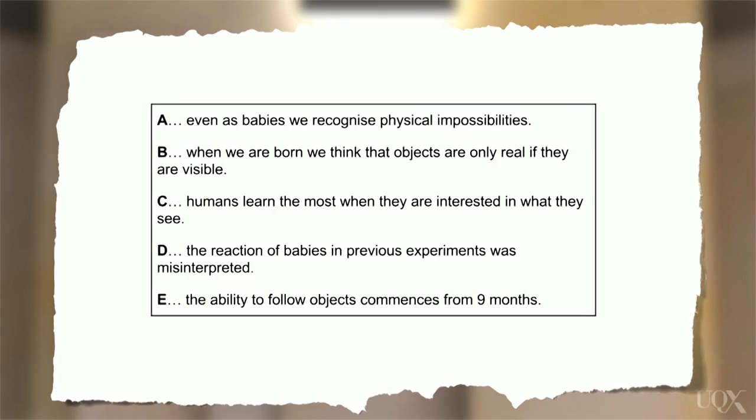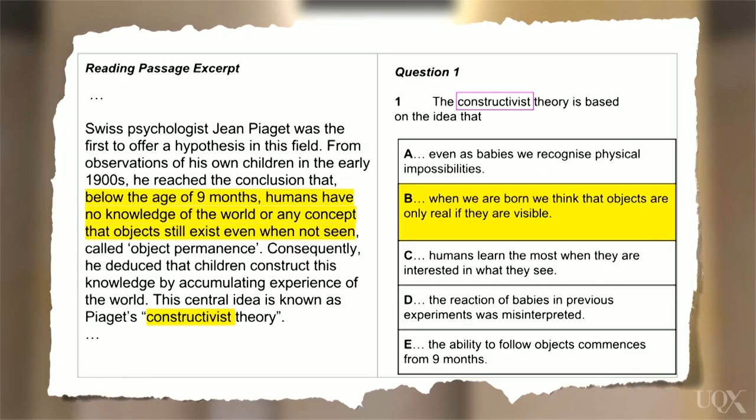Now let's look at the options. You can see that there are five options to choose from, so there are two extra options that you won't need.